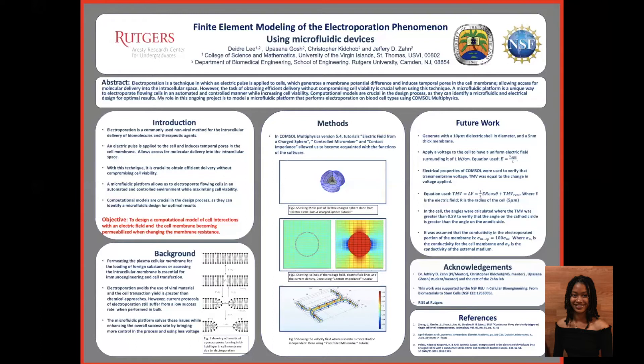Figure two shows a mesh plot of the electric charged sphere done in COMSOL. Figure three is a result of the contact impedance tutorial, which teaches us how to delay or prevent the flow of current, and which is essential because we want to apply a pulse — we want to apply an electric field and stop it, so we need to control the electric current. The circles in figure three are representative of the cell membrane, and it shows the voltage field, the electric field lines, and the current density around it.